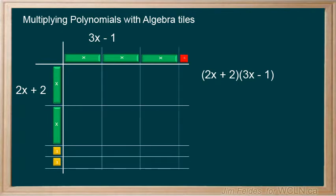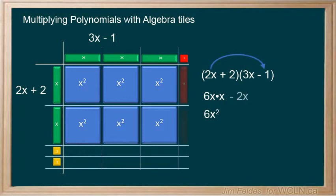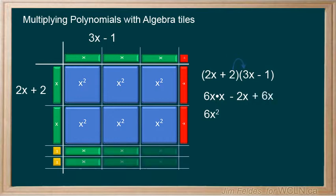And we'll start distributing. 2x times 3x for a total of 6x squared. 2x times negative 1 gives us negative 2x's. 2 times 3x gives us 6x's. And 2 times negative 1 gives us negative 2.